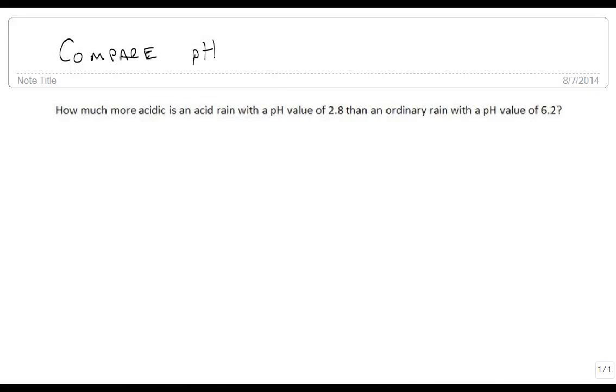So now that we know how to calculate pH values, let's actually talk about comparing pH values. We've got acid rain which has a pH value of 2.8 and ordinary rain which has a pH value of 6.2.